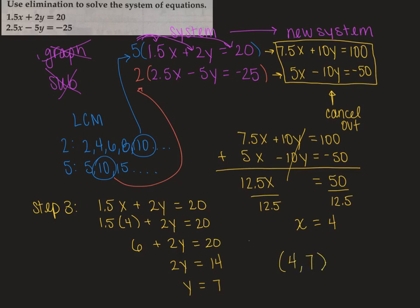And remember what this means, right? What are we finding here? This is the point where those two lines would have intersect if we were going to graph them.